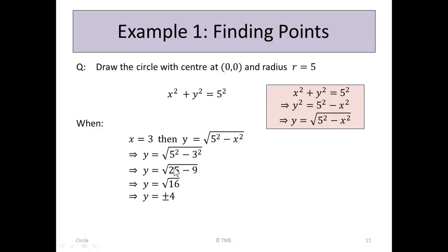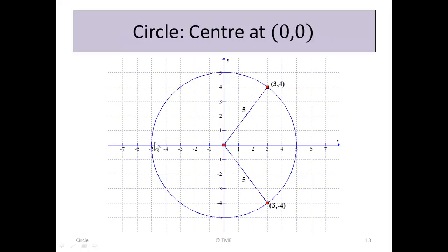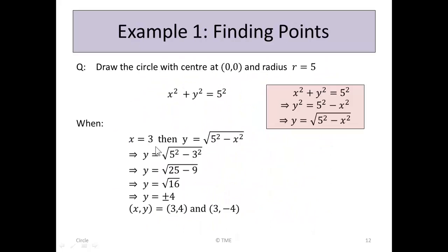So 5 squared is 25, 3 squared is 9. The square root of 25 minus 9 is the square root of 16. And the square root of 16 is plus or minus 4. 4 by 4 is 16, minus 4 by minus 4 is 16. So the two points we get here, x and y, are the points (3, 4) when x is 3 and y is 4, and the point (3, -4).